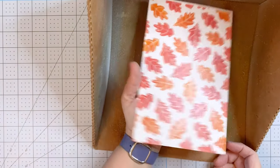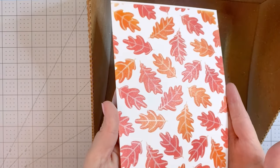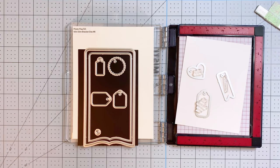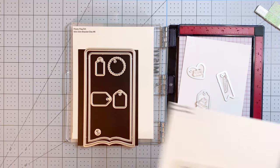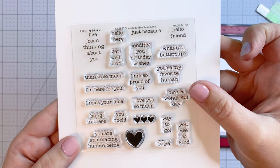Once this dries, the glitter does not move and it just gives you this really pretty sheen. You can see here in the light, it's just gorgeous. It looks all sparkly and pretty. Next, I'm coming in with the mini slim bracket and charms dies. You can see I've picked three out here.